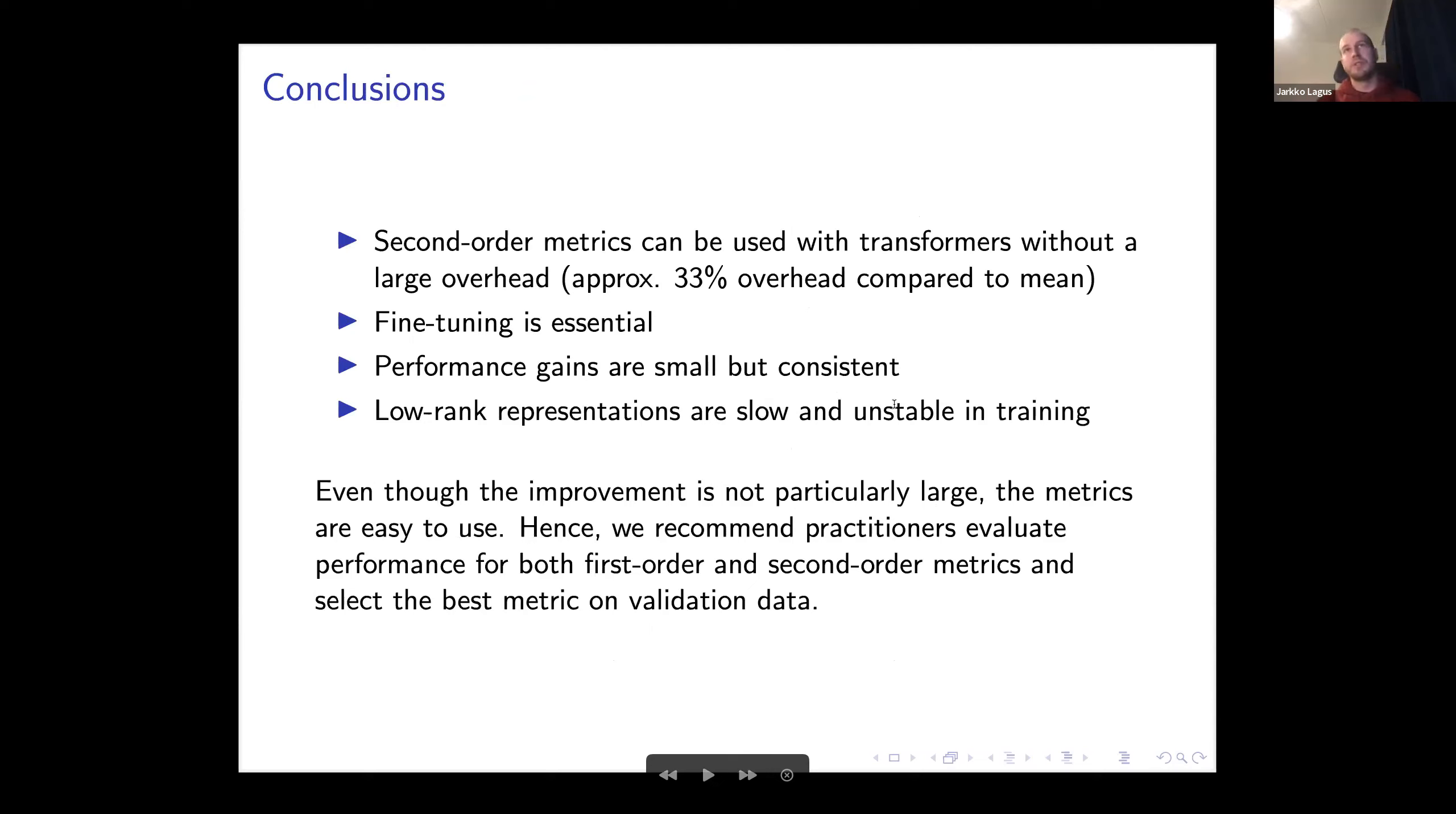To conclude, we can use the second-order metrics as an approach that can be tried with transformers. If you use the full covariance representation, the overhead for computation is just around 33%, so it's not that high, even though it's a much larger representation. Most computation goes anyway for the transformer modeling, so the calculation of the distance is not that crucial.